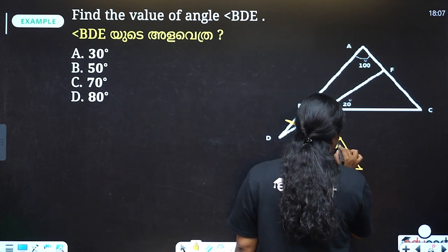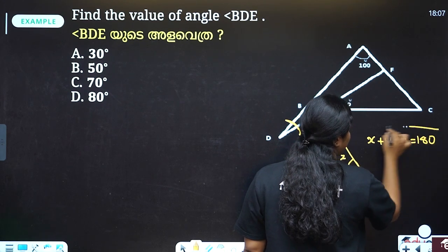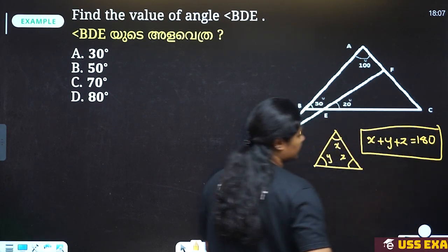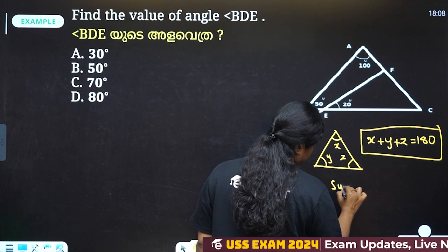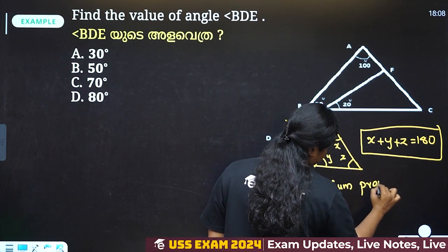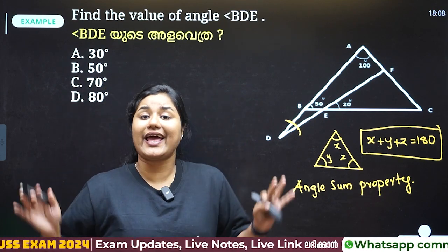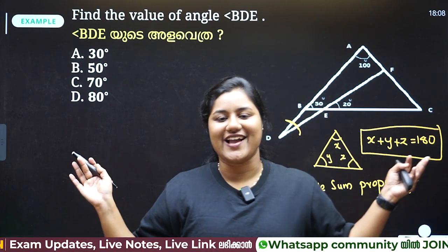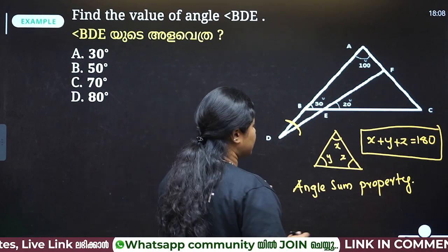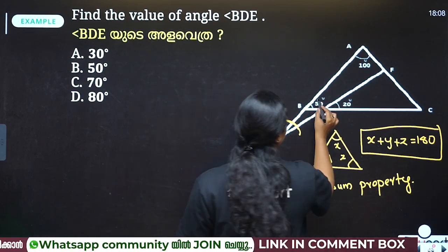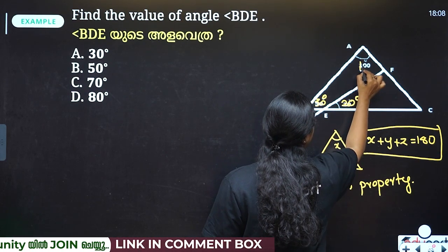In the triangle, x, y, z — if you draw the angles, x plus y plus z equals 180 degrees. This is the triangle angle sum. Do we have a 30-degree angle? This is 30 degrees. This is 20 degrees. This is 100 degrees.